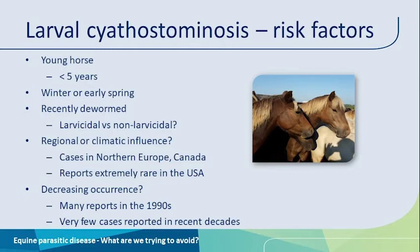There is one very nice epidemiological paper from the mid-1990s from the United Kingdom that identified risk factors for this disease. Primarily it's described in young horses. It primarily occurs in the winter or early spring. Horses typically are recently dewormed — and by recently we mean within 14 days prior to the onset of the event. There's some discussion as to whether there's a difference between using a non-larvicidal anthelmintic such as ivermectin compared to a larvicidal anthelmintic such as moxidectin, and whether the risk might be less with the larvicidal drug. I think there certainly are arguments that it should be, but we don't really have any strong scientific evidence that this is actually the case.